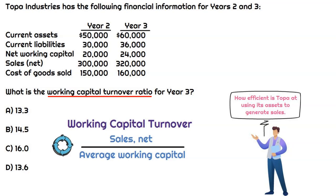For working capital, we're taking the average since it's a turnover ratio. That's going to be the average between year two ending — which becomes the beginning balance for year three of twenty thousand — and then the ending balance for year three of twenty-four thousand. So that averages out to twenty-two thousand.